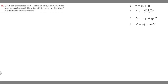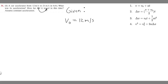The way I like to solve these is by writing down everything we're given first. We go from 12 meters per second to 21 meters per second, so our initial velocity v₀ equals 12 meters per second and our final velocity v equals 21 meters per second. We do this in six seconds, so our time t equals 6 seconds.